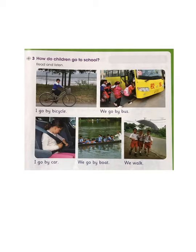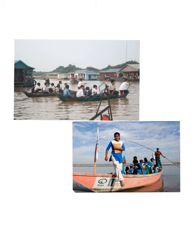Let's read. I go by bicycle. We go by bus. I go by car. We go by boat. We walk. Here, we can see some of the pictures where the kids are going to school by boat. Look here — these children are going to school by boat.